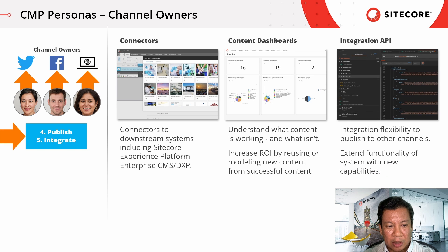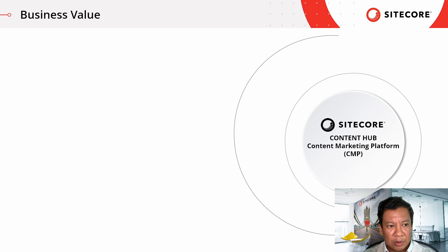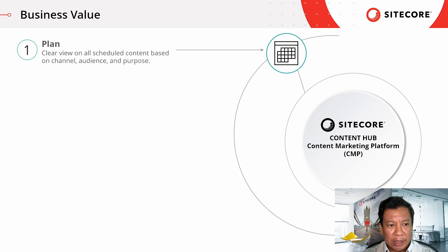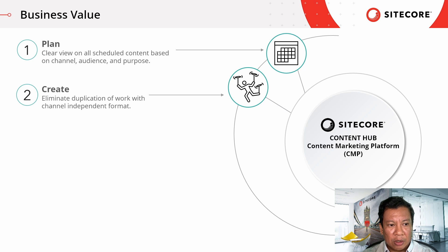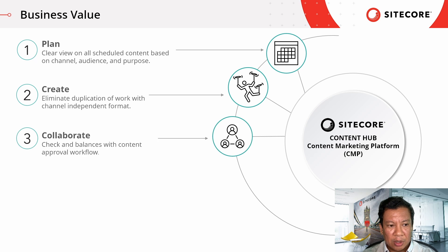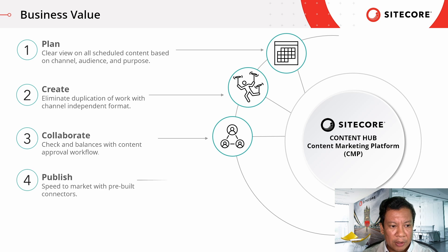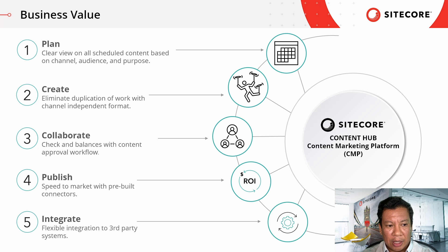The Hypermedia API allows partners to build integrations to other channels such as social media or video streaming services. In summary, the Sitecore CMP provides many benefits to your business. The planning capabilities help you deliver meaningful content across channels and audiences. The authoring tools eliminate duplication of work and allow content authors to focus without worrying about presentation details. Content managers and authors can collaborate and have checks and balances through approval workflows. The CMP connectors provide speed to market to publish content to websites, and businesses have the flexibility to integrate with other third-party systems.